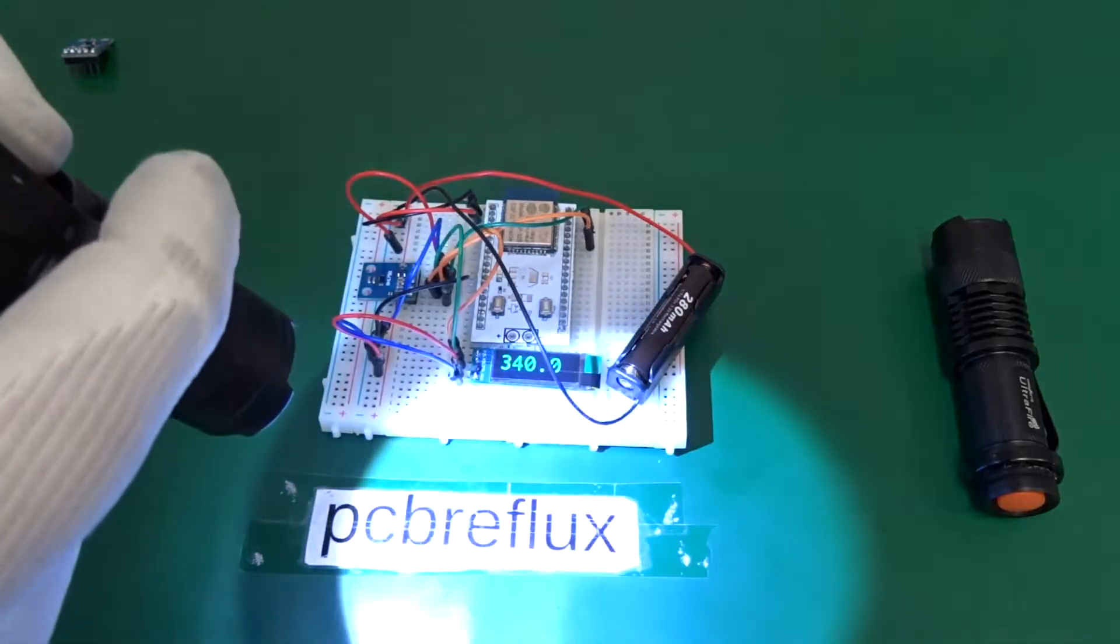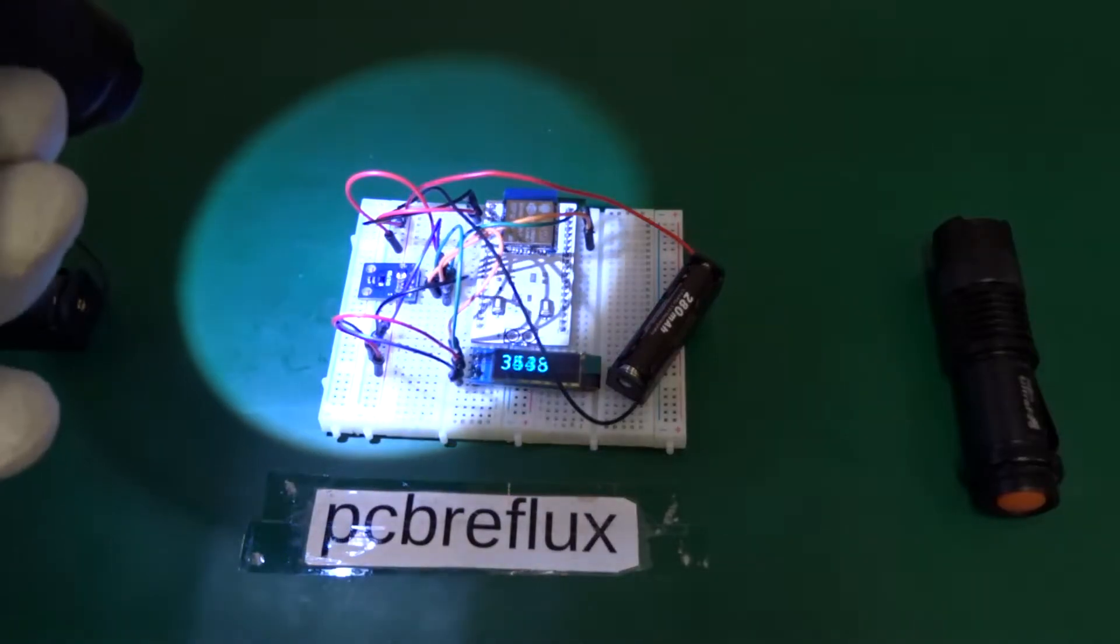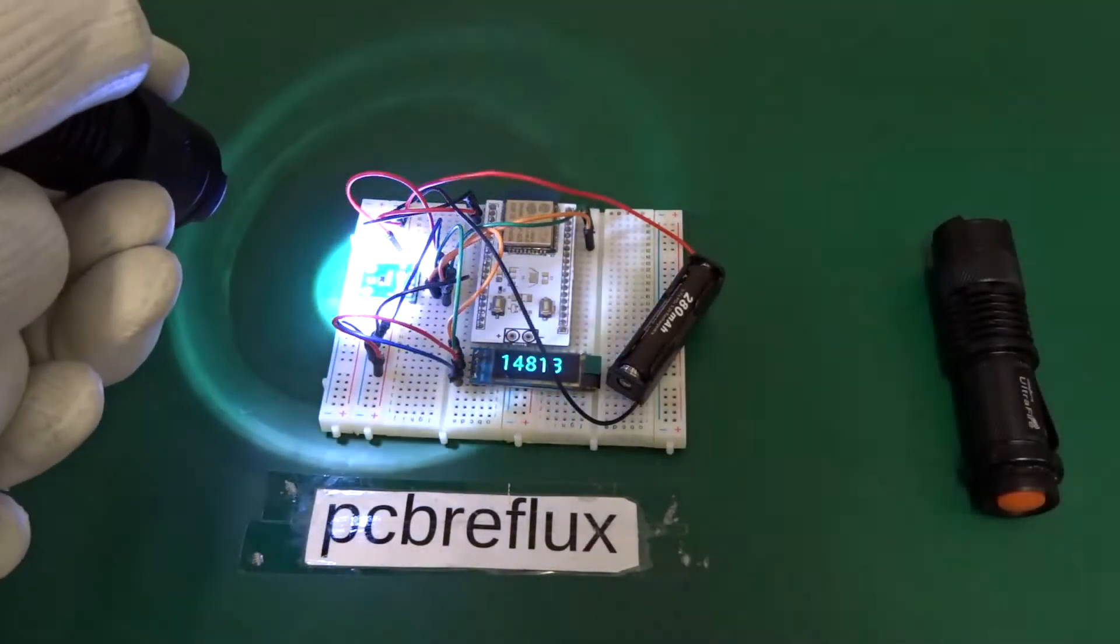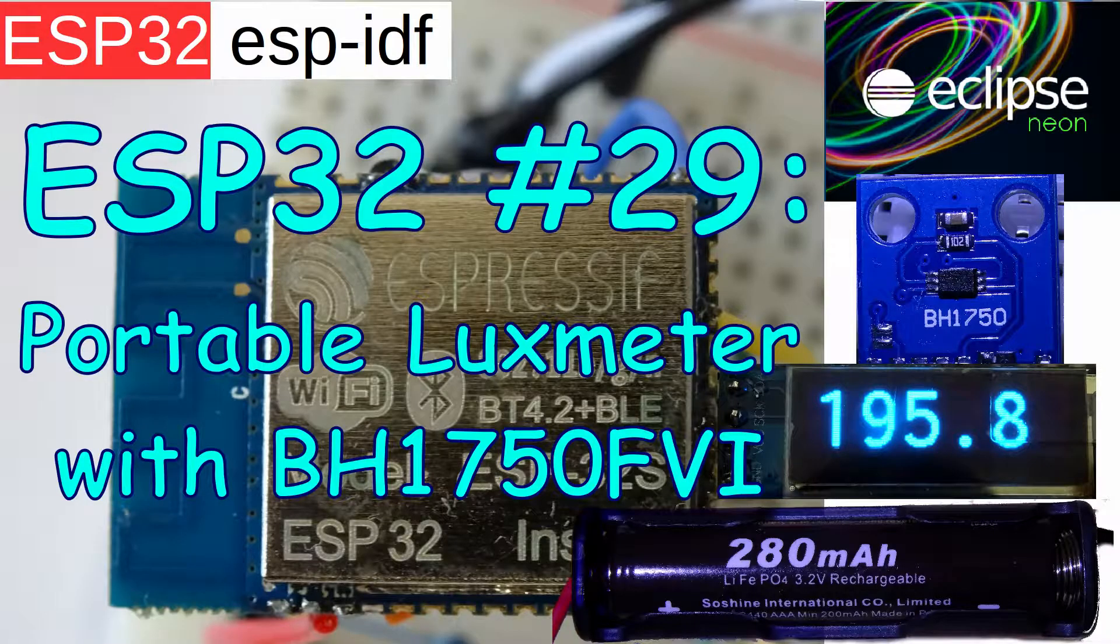Hi, today I want to talk about a do-it-yourself luminescence meter or lux meter. I use the ambient light sensor from Rome Semiconductor, the BH1750.